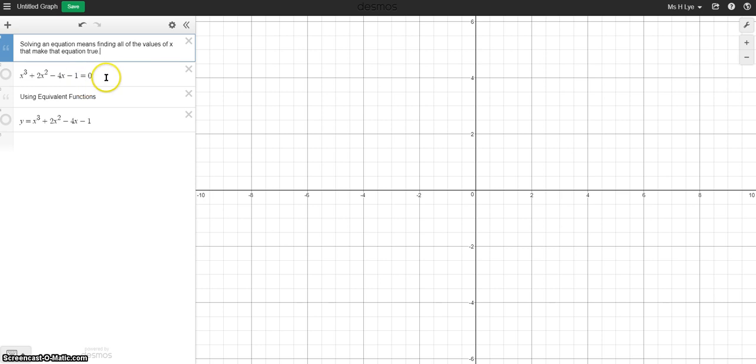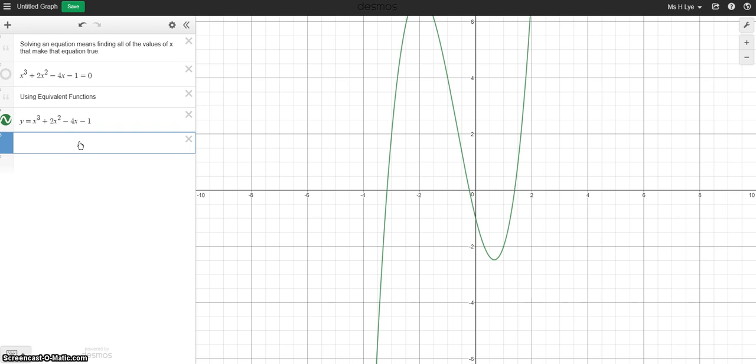So here's an equation that we want to solve. We're going to do that using graphing by graphing an equivalent function. You can see here that the left side of the equation is actually the function here that I'm going to graph. We want to know where that is equivalent to zero. In other words, where does that actually cross the x-axis?